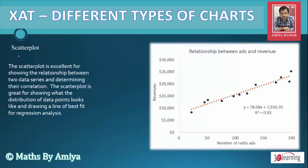Our first chart is the Scattered Plot. The Scattered Plot is excellent for showing the relationship between two data variables. JAT has asked questions on the Scattered Plot. We always have a best fit line; if we do not have one, we assume it. This best fit line equation shows the linear relationship between the two variables.